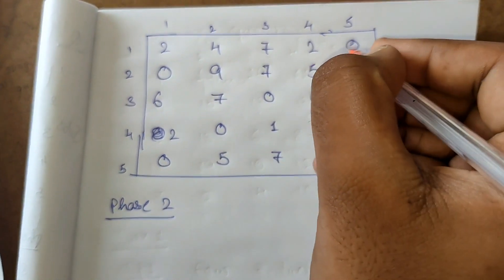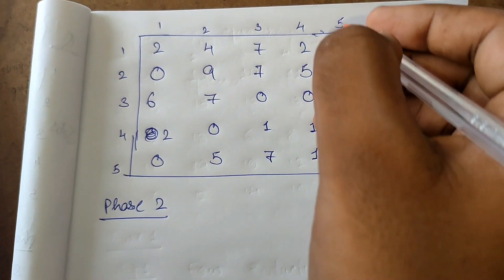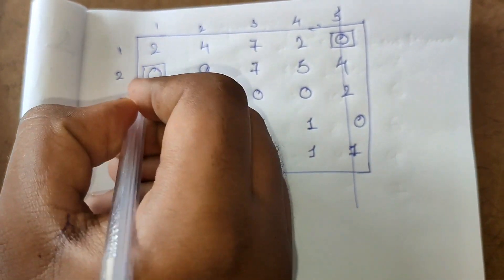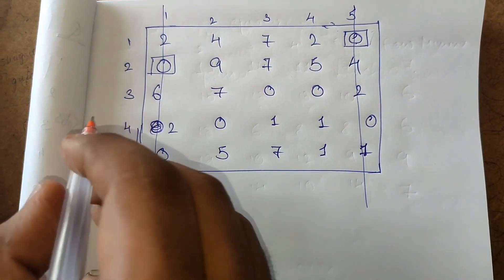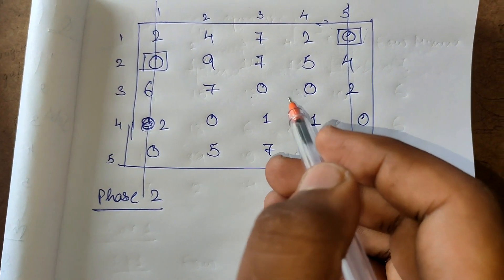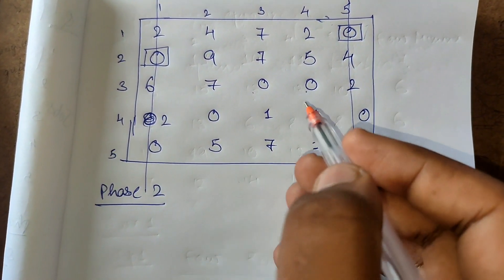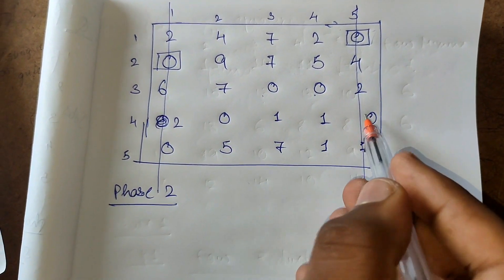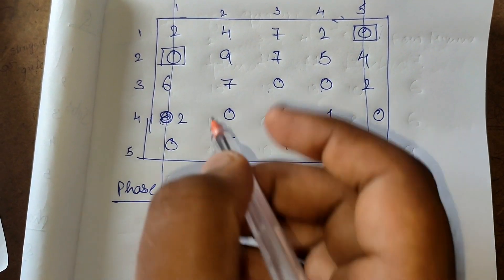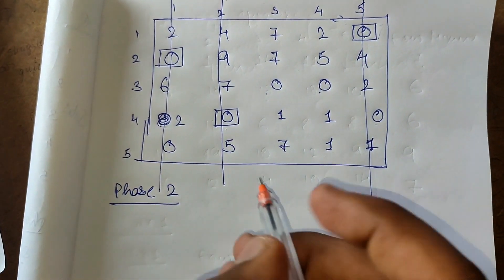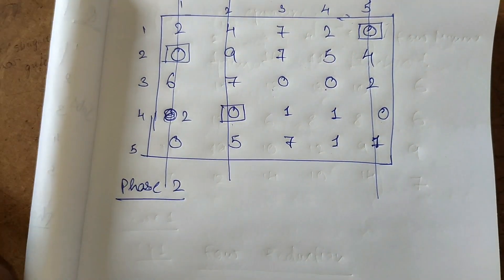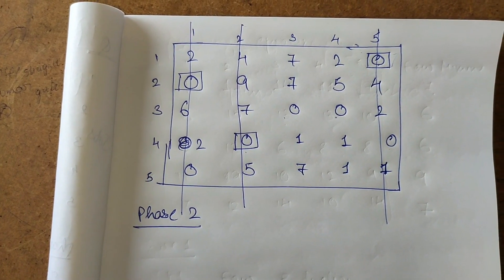Applying row scanning: the first row has one zero — highlight it and strike off that column. The second row has one zero — strike off its column. The third row has two zeros, so we skip it. In the fourth row, one zero is already cut off by a line, so only one zero remains — highlight it and strike off that column. The fifth row has no undeleted zeros, so we skip it. This completes row scanning.